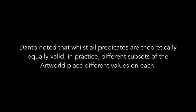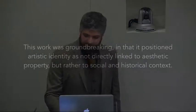Danto noted that while all the predicates are theoretically equally valid, in practice, different subsets of the art world place different values on each. You've got the experimental contemporary art world happening in places like London and Hackney, versus the American Southwest painting scene depicting landscapes, cows, and horses — both have distinct sets of ideas as to what makes art valid or not, with very different weights given to different stylistic aspects of the work. What's nice about this is that it distinguishes art from being something linked to aesthetic property and turns it into something linked to social and historical context.